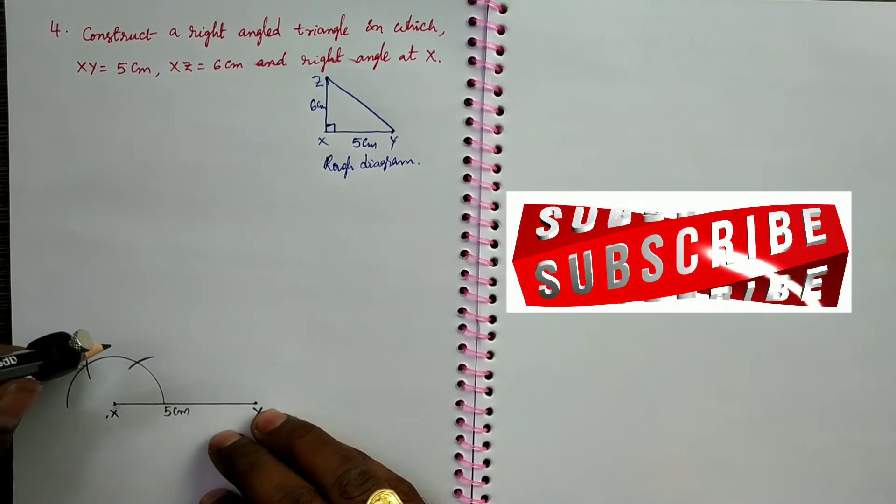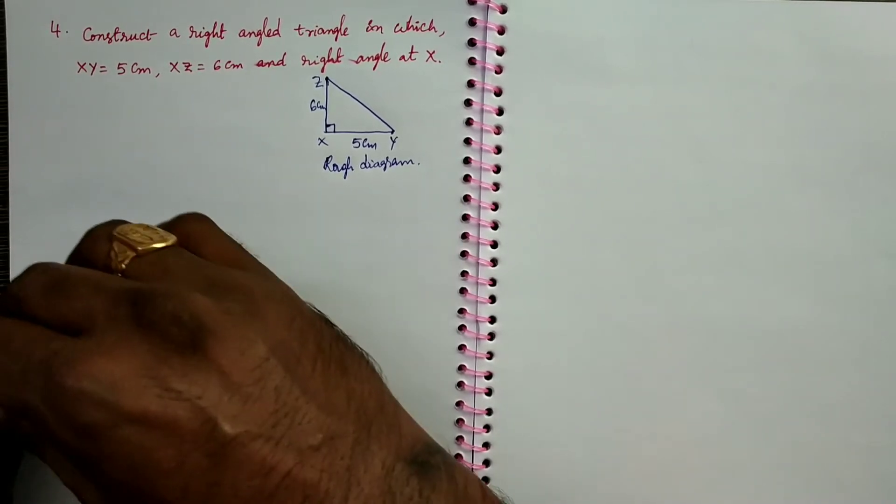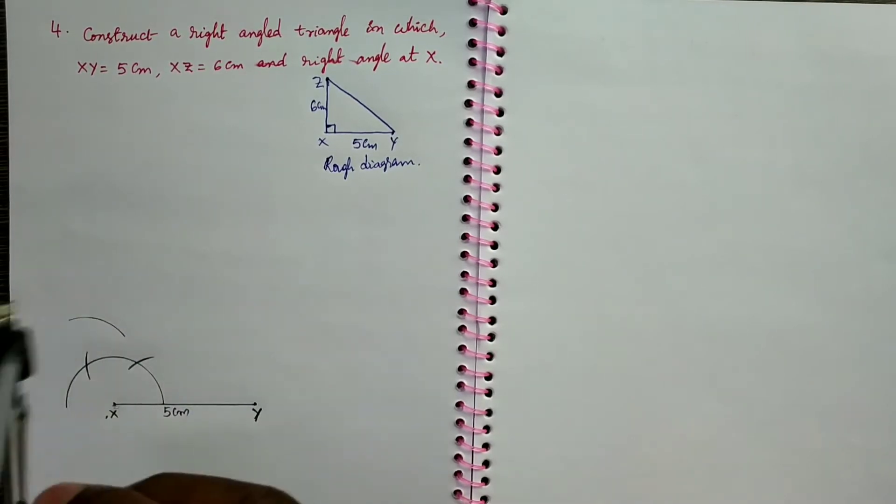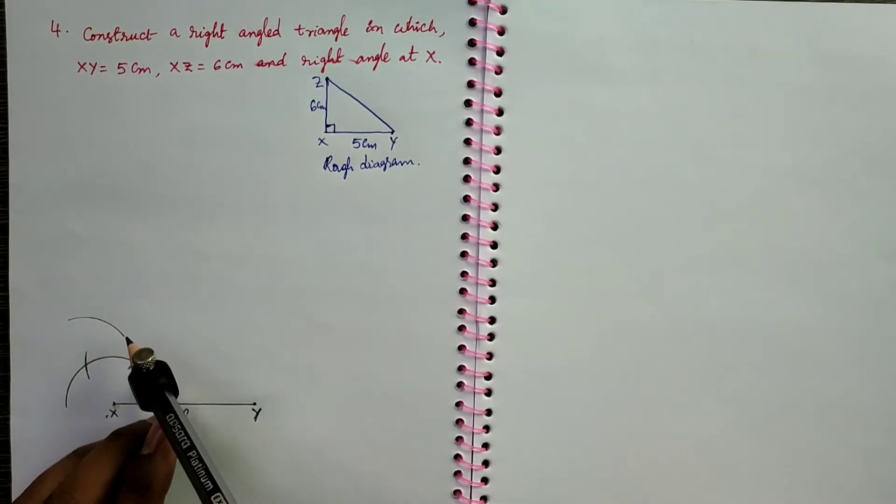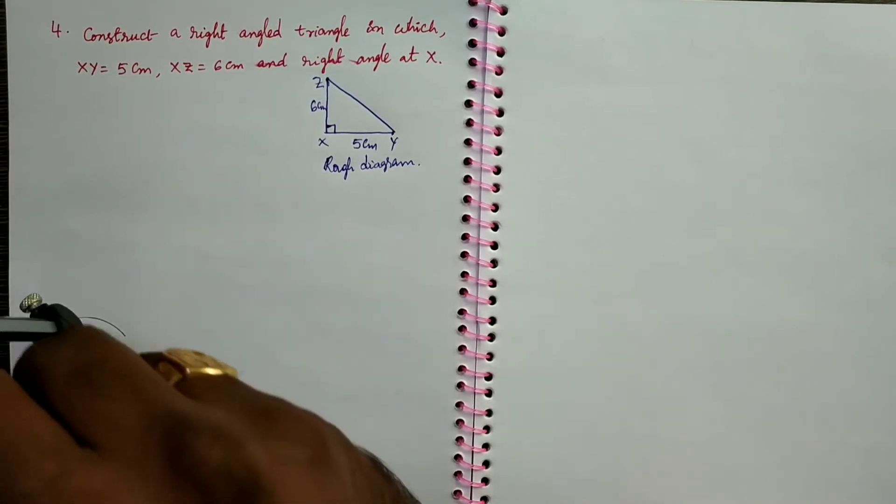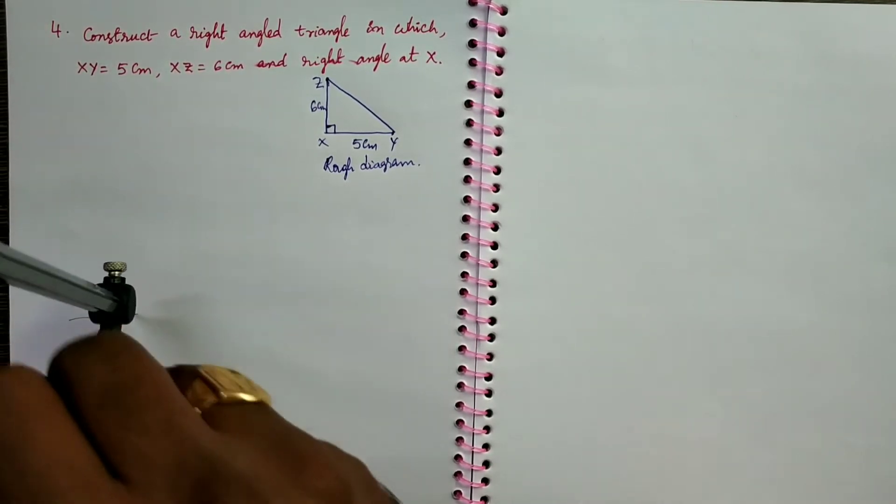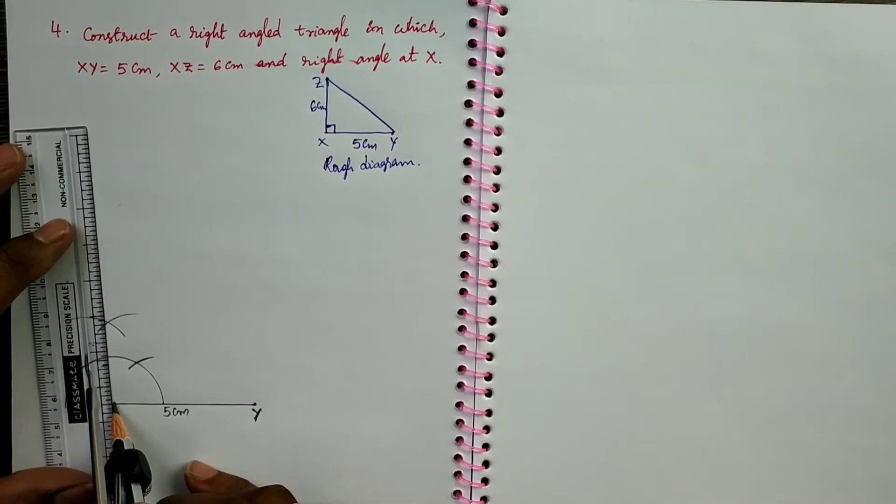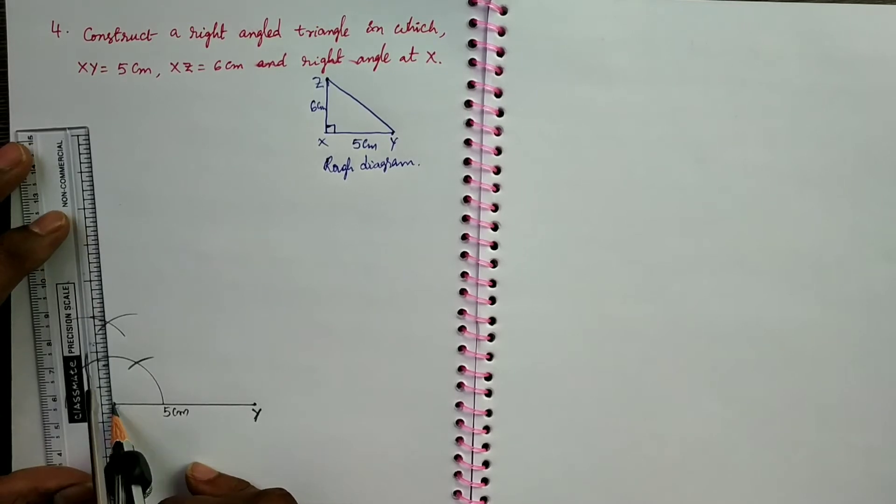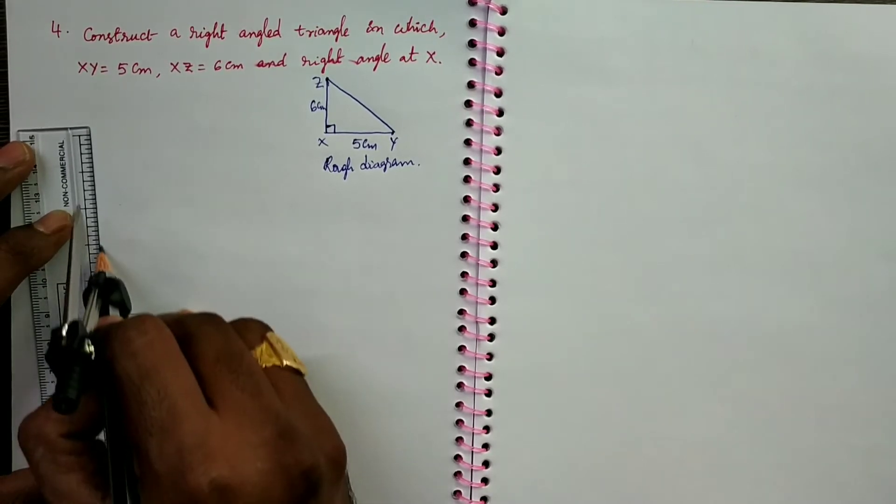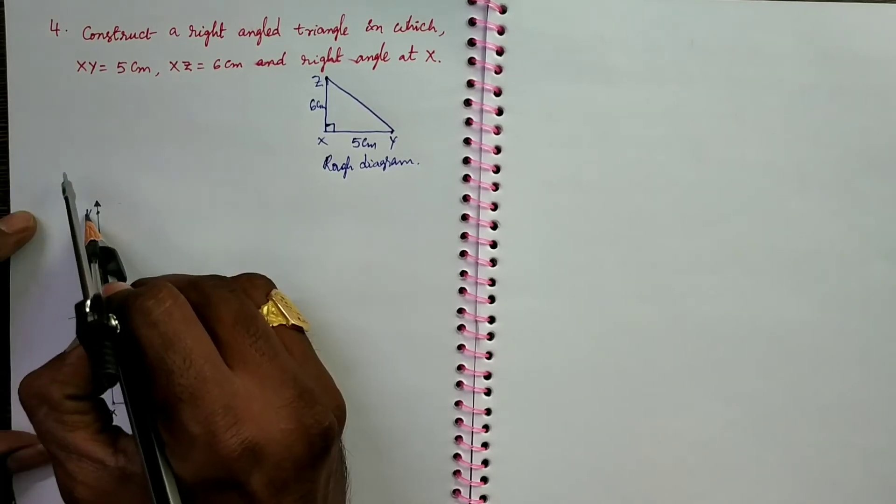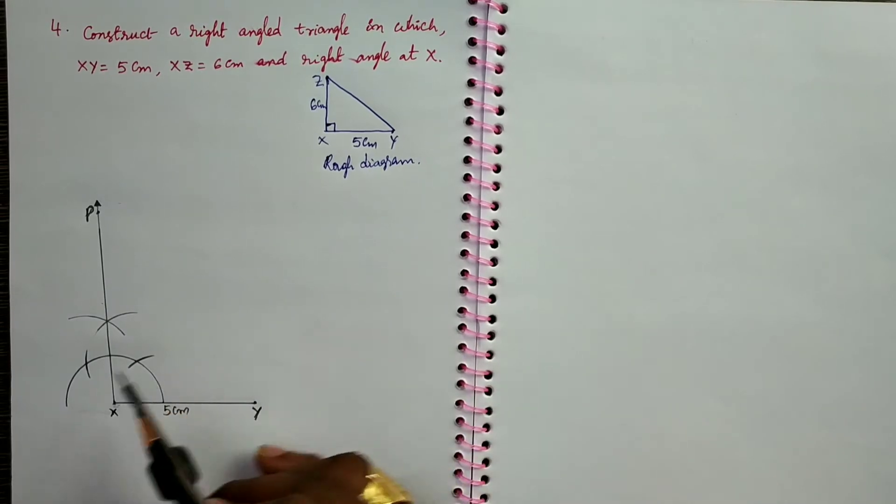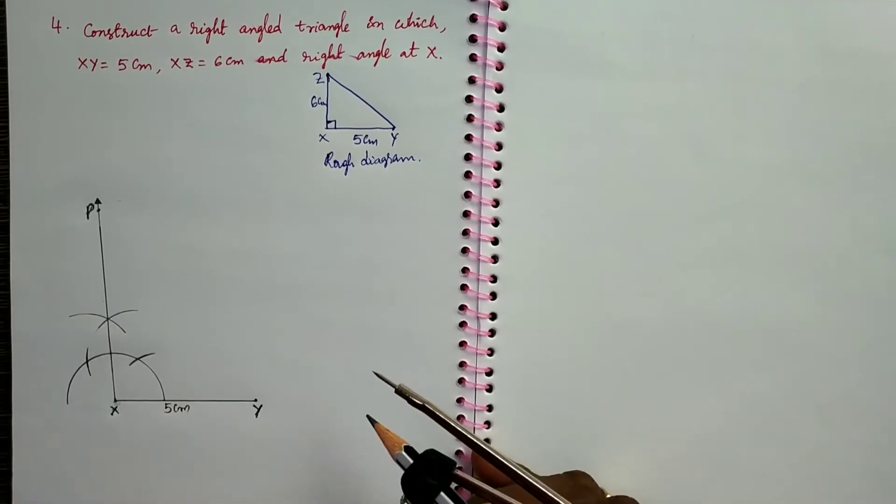From 120 degrees, draw an arc with the same measurement. From 160 degrees also draw an arc. Now, from X through the points of intersection of two arcs, draw an arc.